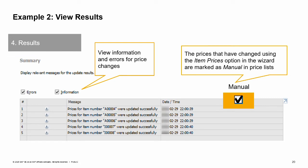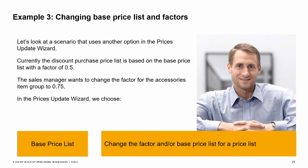The fourth step of the wizard displays the results of your changes. You can view information on what was changed with a date and time. If there are errors, you will see them as well. We saw before that making individual changes in a price list causes the system to set the manual checkbox. The manual checkbox is also set for changes to item prices when using the prices update wizard, meaning these prices will no longer be automatically maintained using factors.